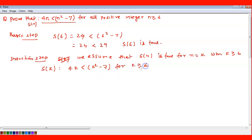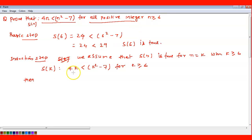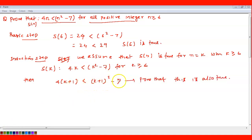For k+1, we replace n with k+1. We need to show 4(k+1) < (k+1)² - 7. We expand 4(k+1) as 4k + 4. In the rough work, you replace k with k+1 to know your target right-hand side: (k+1)² - 7. Using our assumption that 4k < k² - 7, we can prove this is also true for k+1.